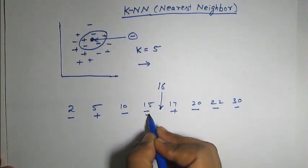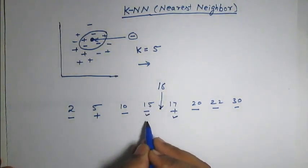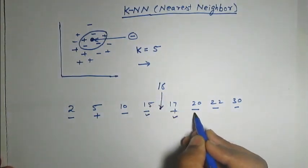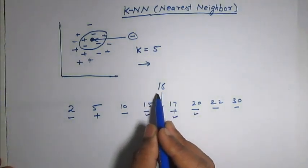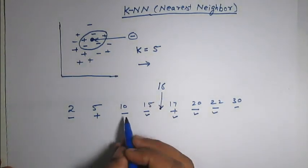So, 15, 17, and from 16 the 20 is the nearest. And from 16 after that 22 and after that 10.